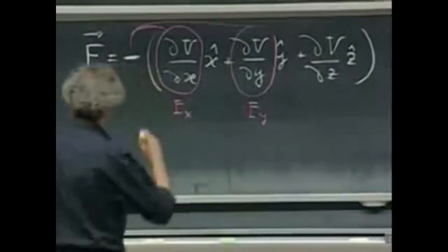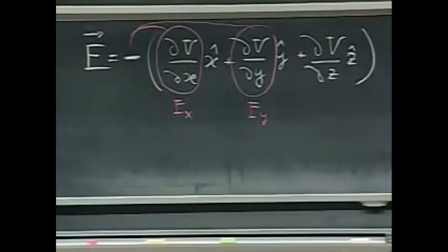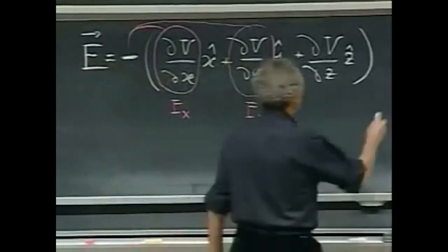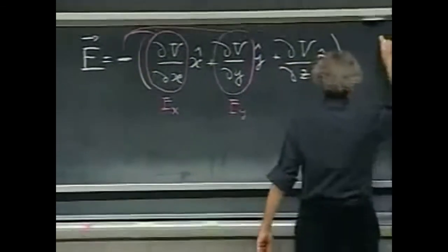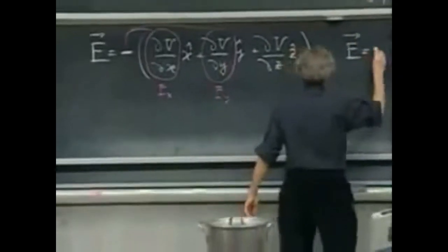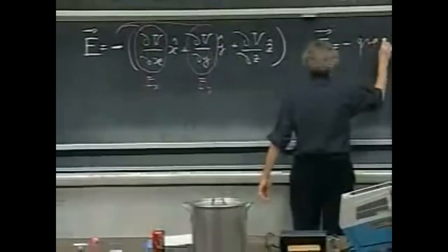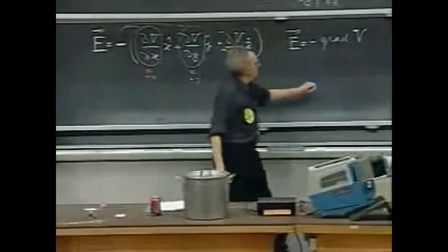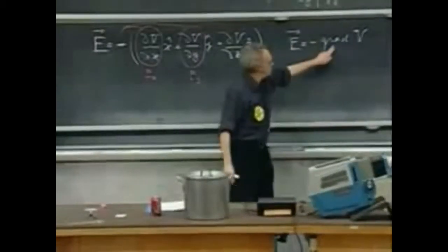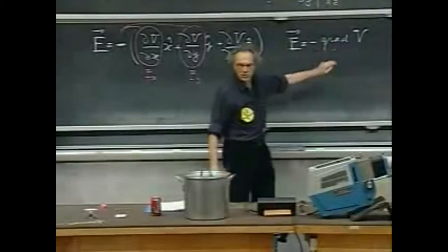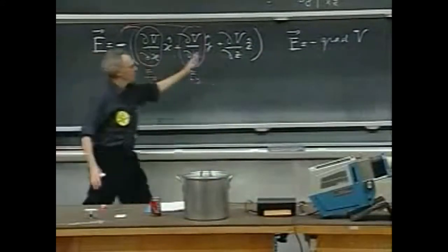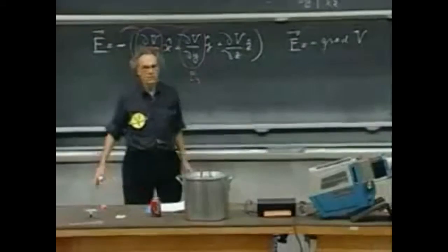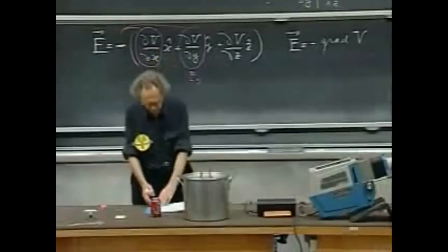And so this is the Cartesian notation for which in 18.02, you will learn, or maybe you already have learned, we would write this E equals minus the gradient of V. This is a vector function, this is a scalar function, and this is just a different notation, just a matter of words, for this mathematical recipe.